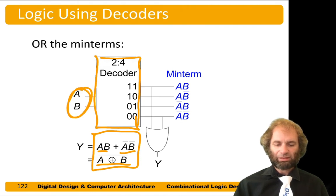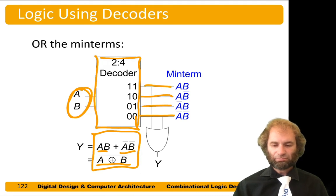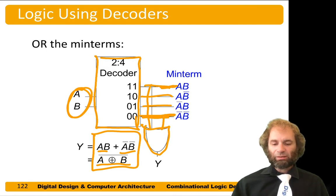So we could feed a and b into our decoder, get out four minterms. This row will be asserted if a and b are both true, this if a and b are both false, and so on. And then we could OR together. We want our output to be true when a and b are both true or when a and b are both false. So here we have built logic with a decoder.